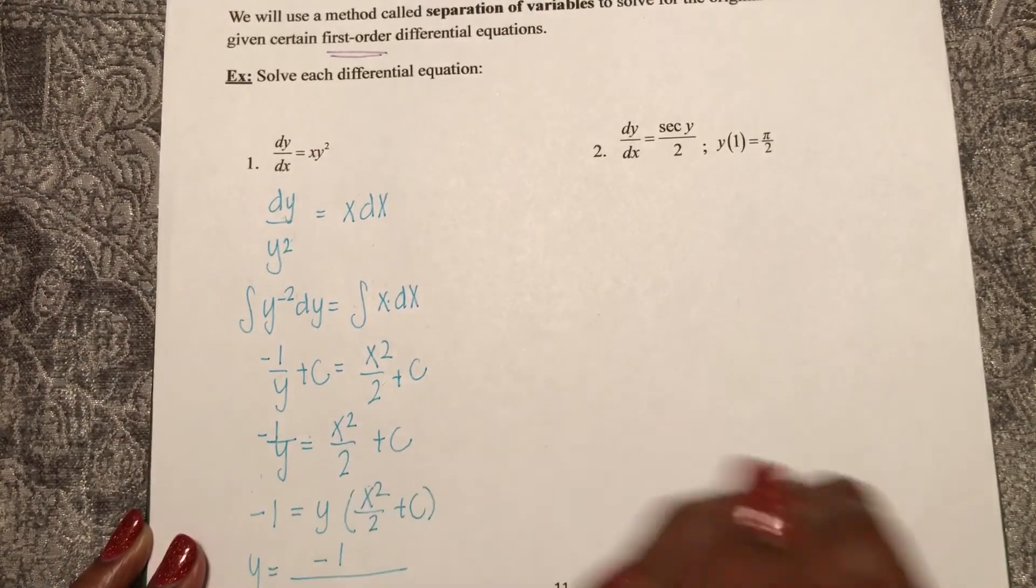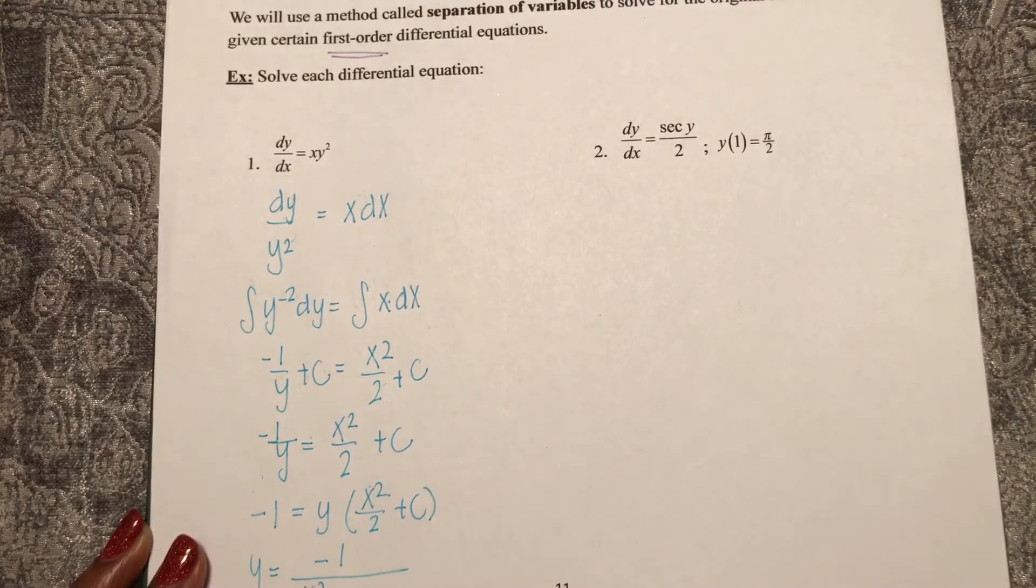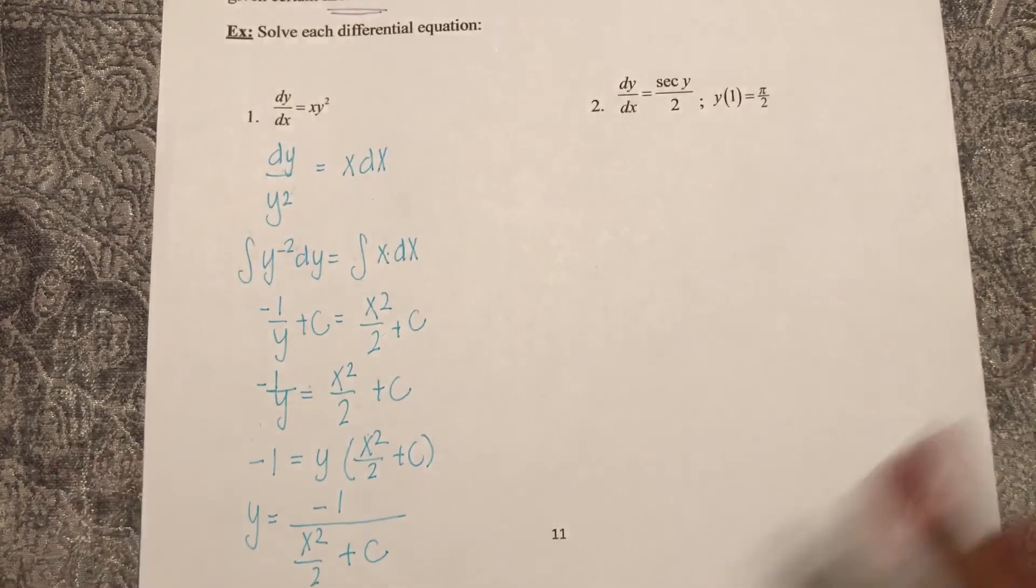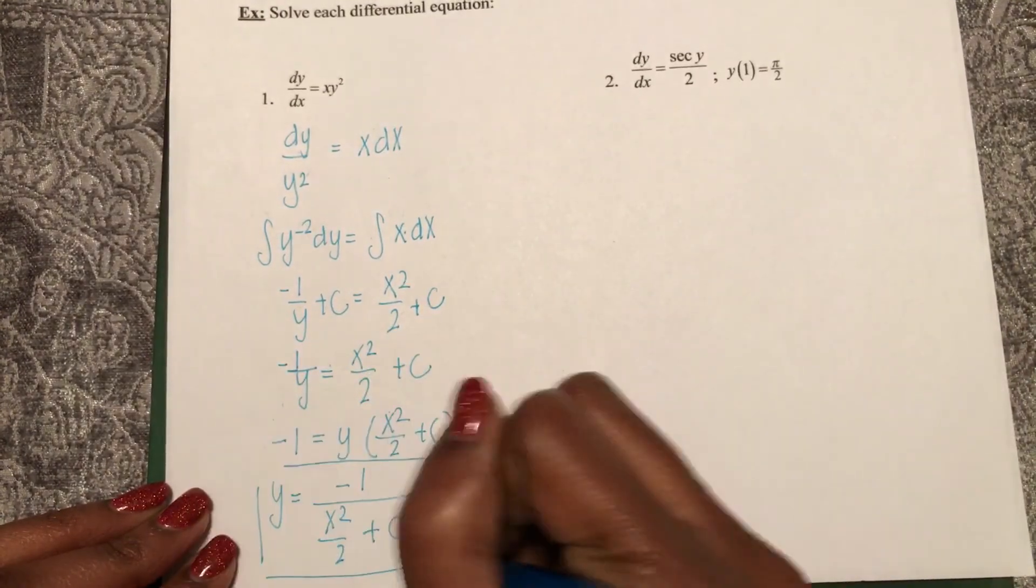y equals negative 1 over x squared over 2 plus c. So now that is my solution to my differential equation.